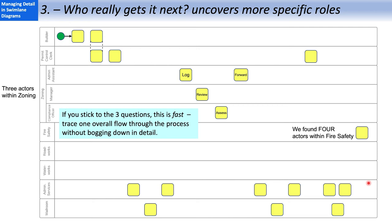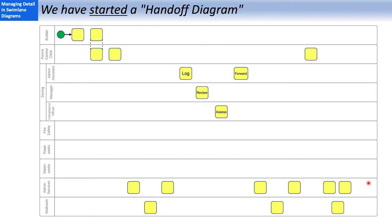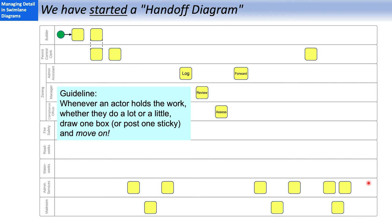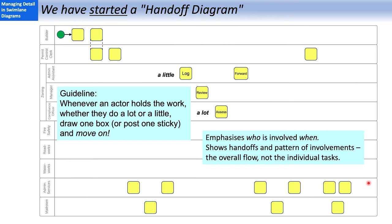But remember, if you stick to these three questions, and stop yourself from asking, what do you do, you can get through this very quickly. Trace the overall initial flow. What we've done is we've started the first level of detail in swim lane diagrams, which I call a handoff diagram. In a handoff diagram, whenever an actor holds the work, whether they do a little, or whether they do a lot, we are going to post one box, one sticky, one dot, and move on. Because our emphasis here is on who is involved when. This is a very powerful diagram because it shows the overall pattern of the process and often tells me more about what's right or wrong with the process than a more detailed diagram.